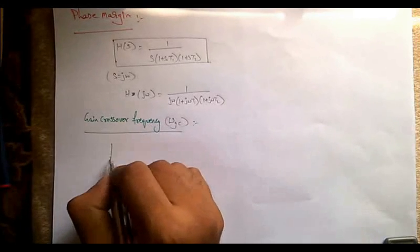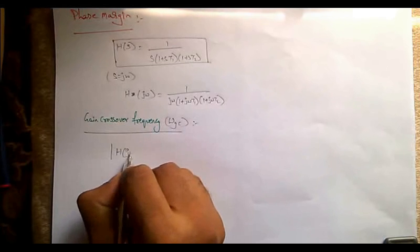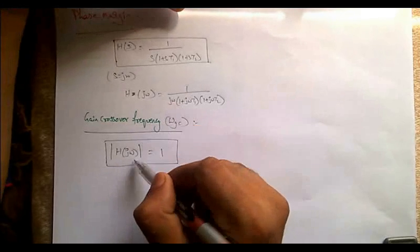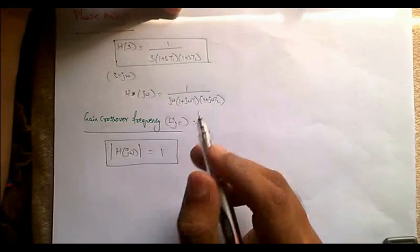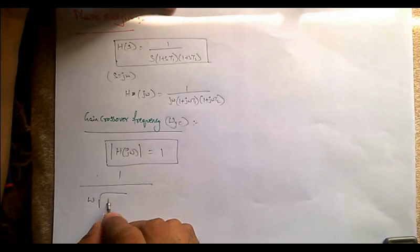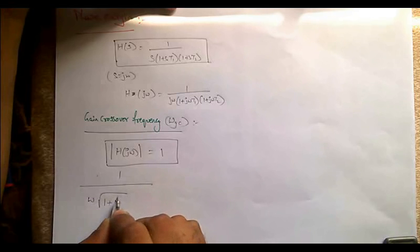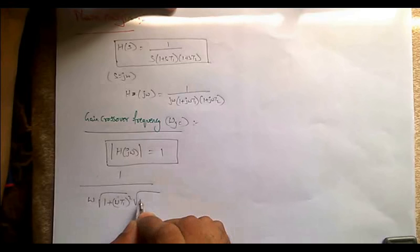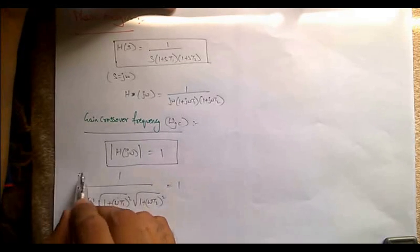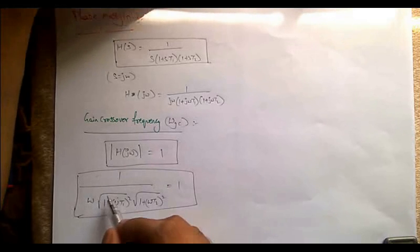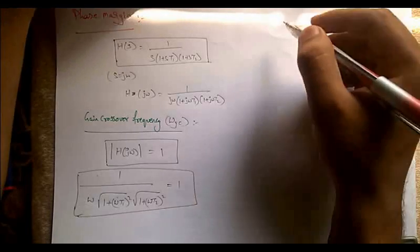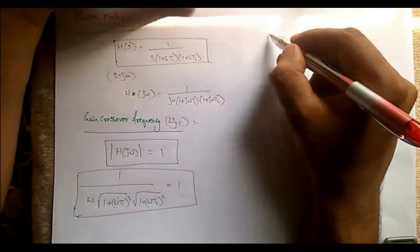To find the gain crossover frequency ωgc, we set the magnitude of H(jω) equal to 1. This gives: 1 divided by ωgc times √(1+(ωgc·T1)²) times √(1+(ωgc·T2)²) equals 1. Solving this equation, we obtain the gain crossover frequency ωgc.